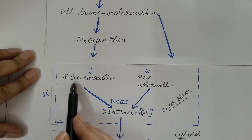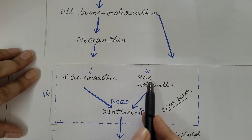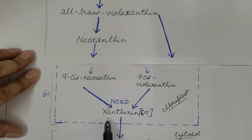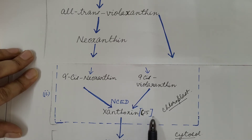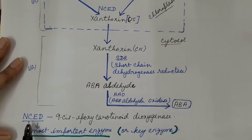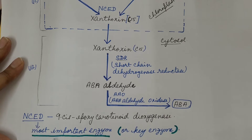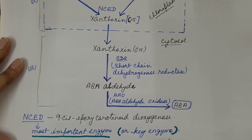Then 9-cis-neoxanthin or 9-cis-violaxanthin is converted into xanthoxin, which is a 15-carbon compound. This reaction is catalyzed by the enzyme NCED — 9-cis-epoxycarotenoid dioxygenase. This is the most important enzyme, also known as the key enzyme.